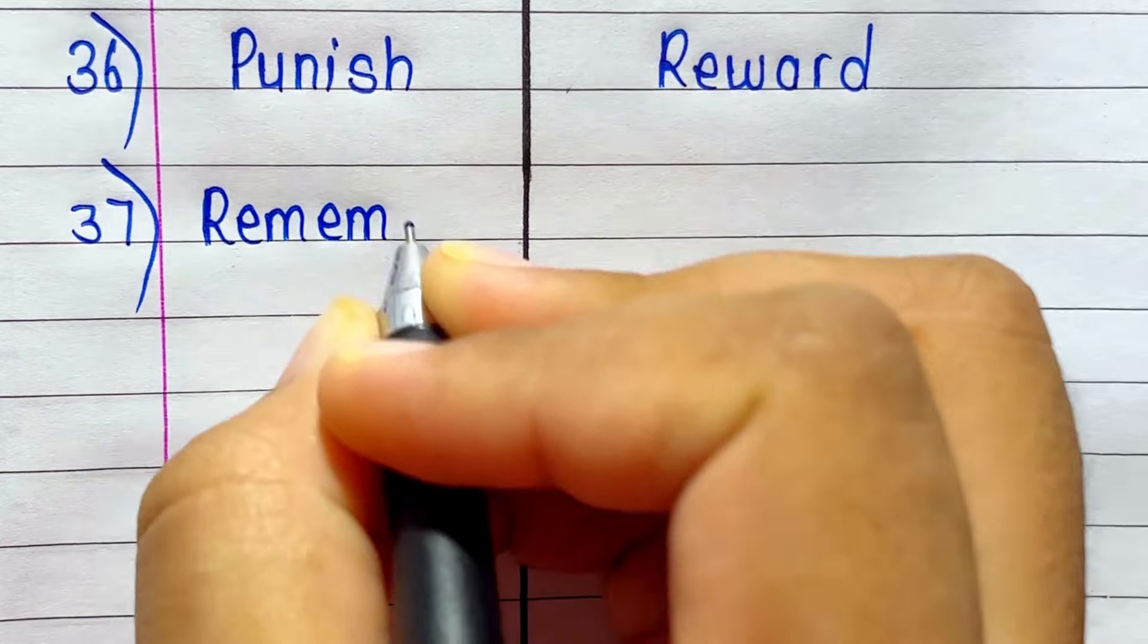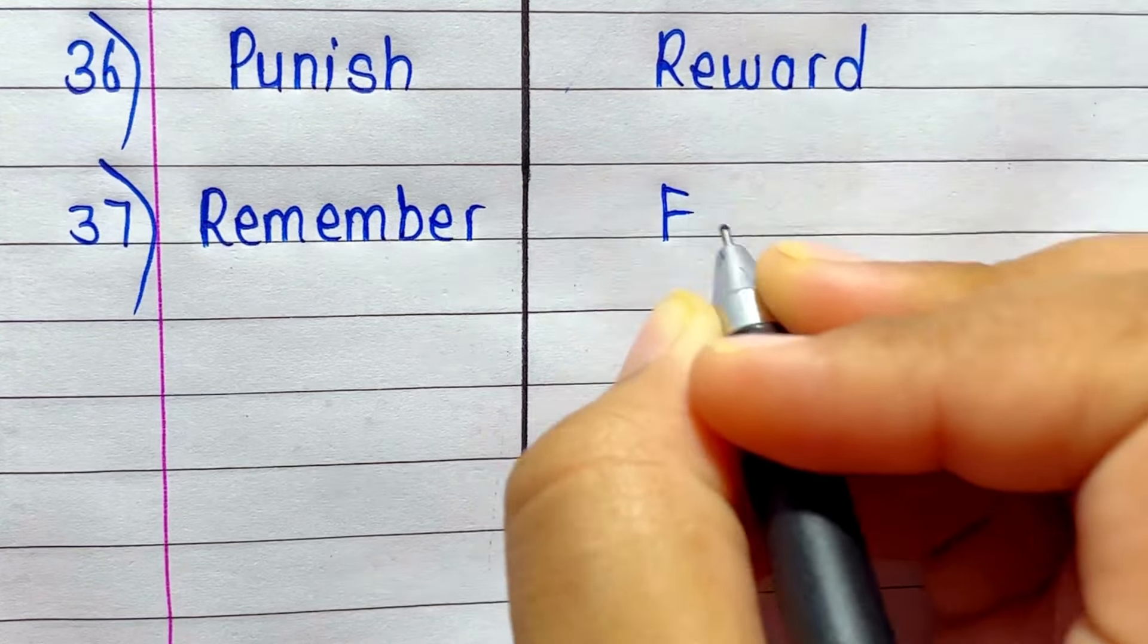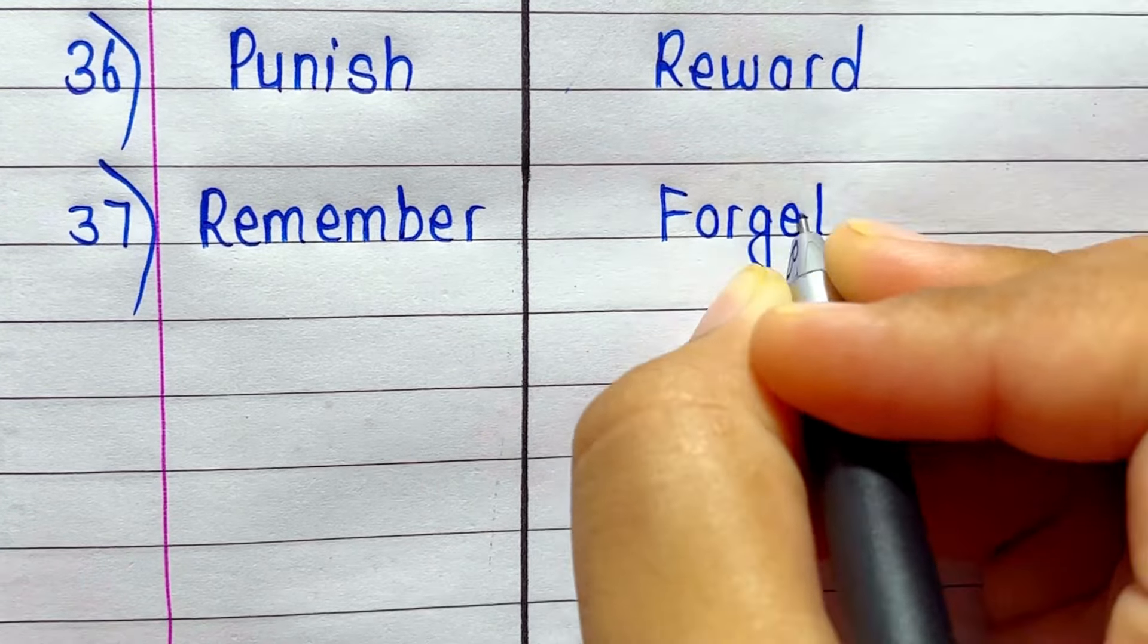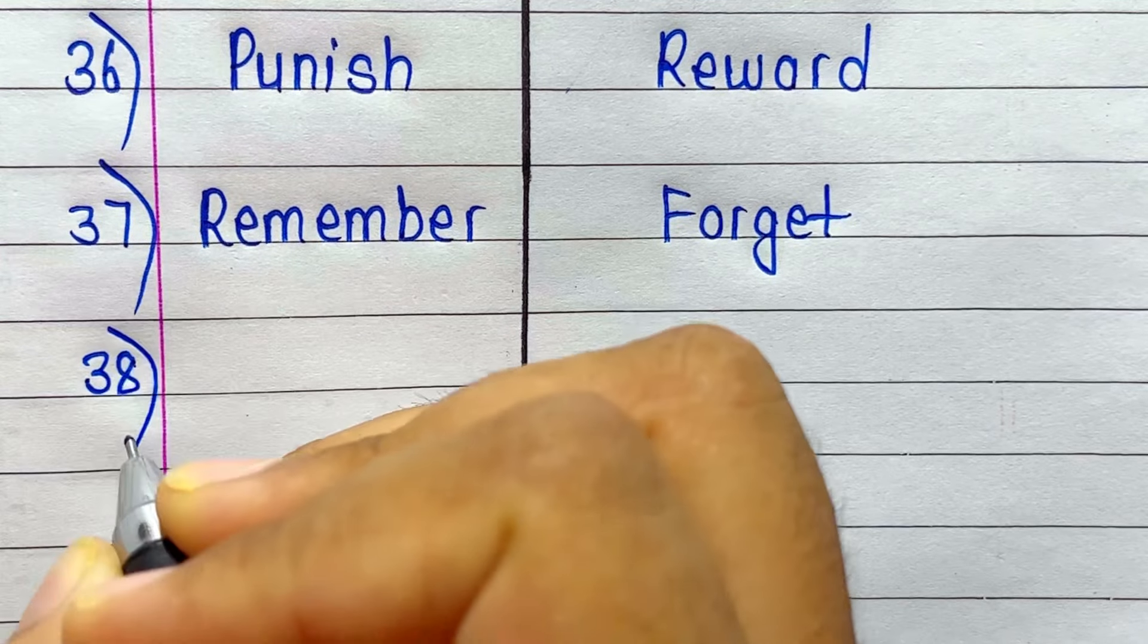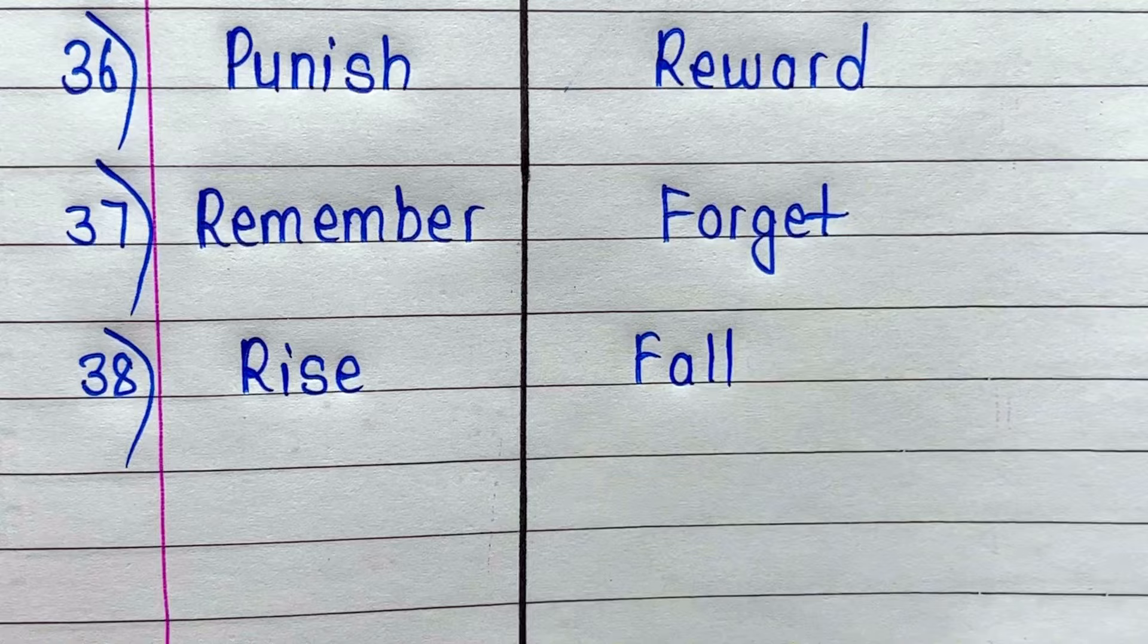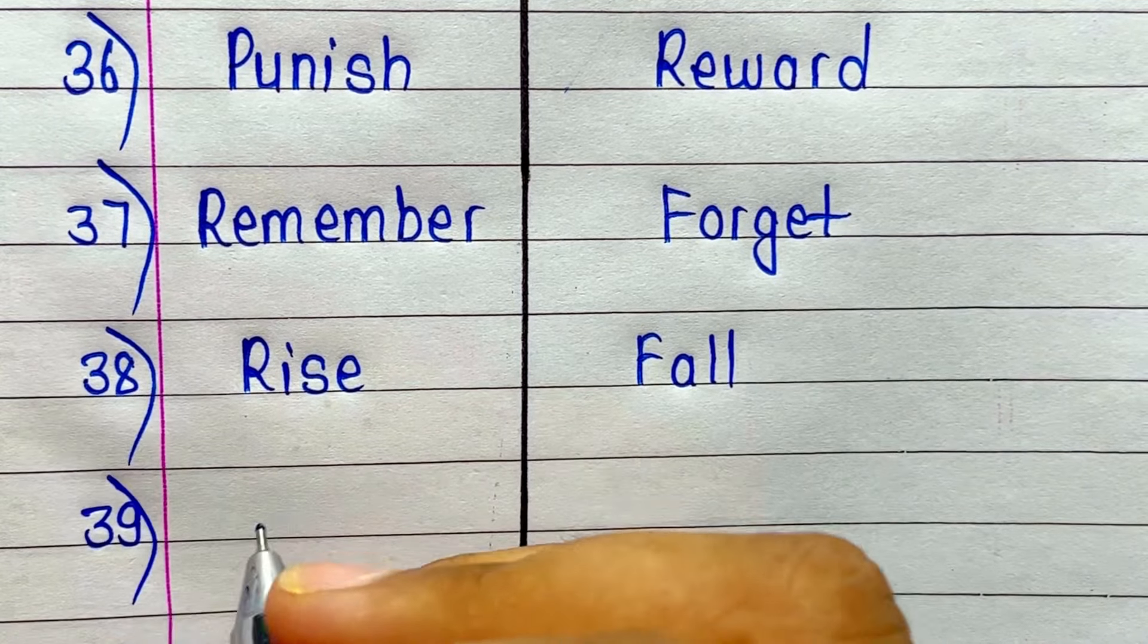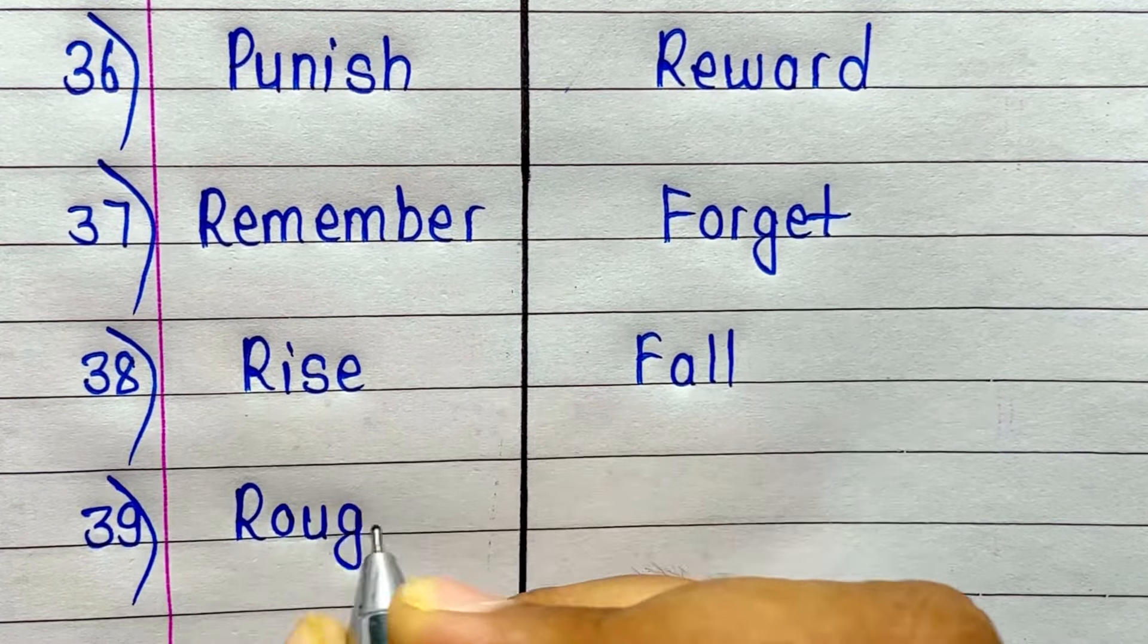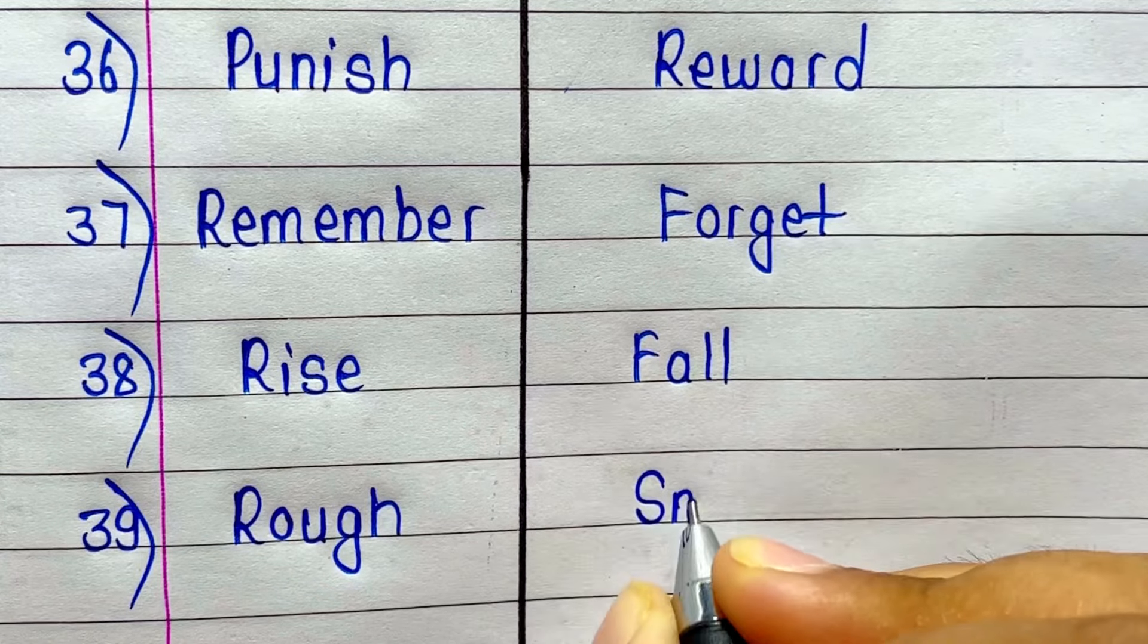Antonym of Remember is Forget. Rise. Antonym of Rise is Fall. Antonym of Rough is Smooth.